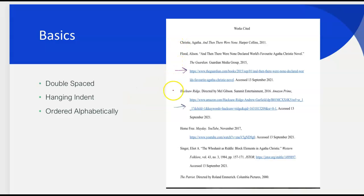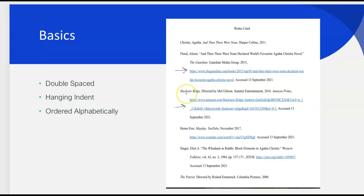When you create a works cited page, there are no numbers, no bullet points, and no headings indicating what type of source they are. Instead, they are ordered strictly alphabetically by the first thing — usually the author's last name — or the first leading word of the citation. Make sure that yours are ordered alphabetically as well.